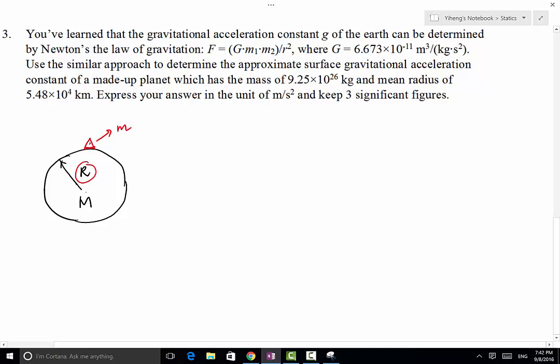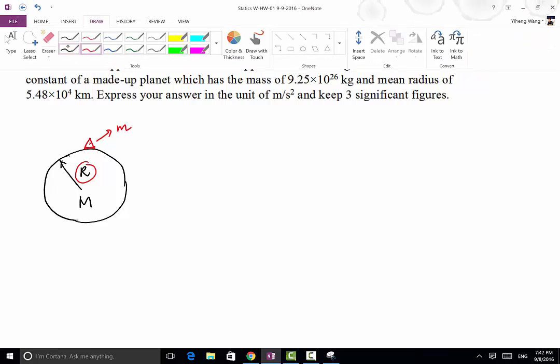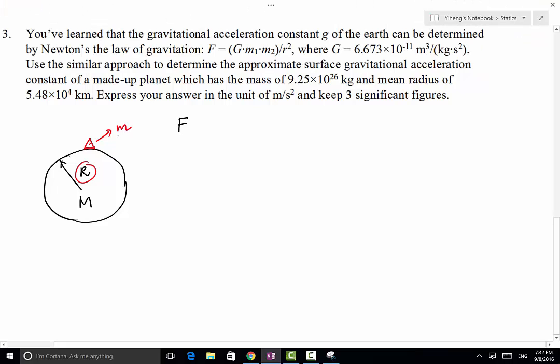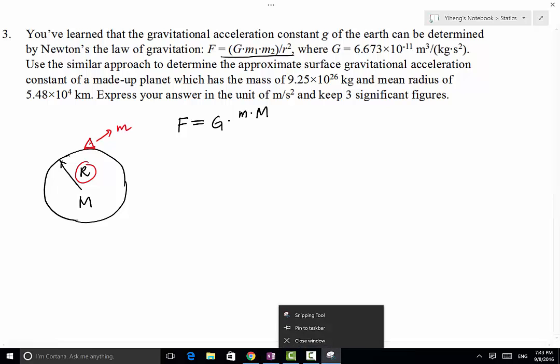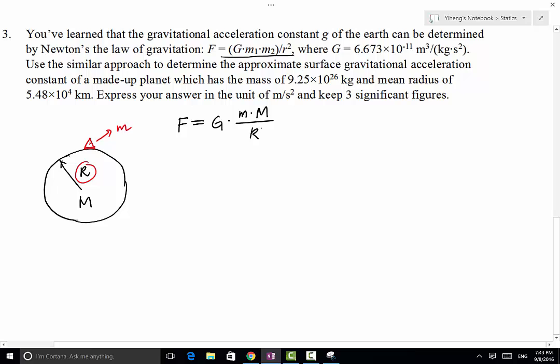So if that's the case, the force between the small m, the small object, and the Earth can be given by Newton's law of gravitation: G multiplied by small m times capital M, that's the mass of Earth, divided by the distance, which is capital R squared.